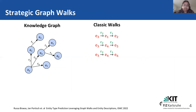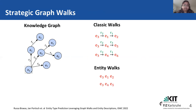Next comes the entity walk. In the entity walk, as the name suggests, we consider only the entities. Starting from E3, we have E1, E2 — we don't consider the relations between them. Then we have E3, E4, and E5. And again, we have E3, E4, and E6.